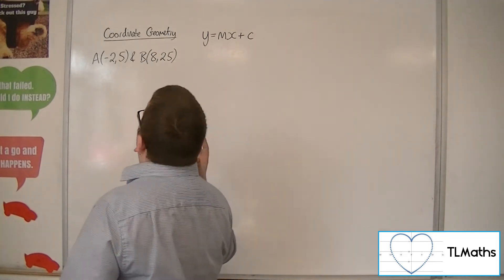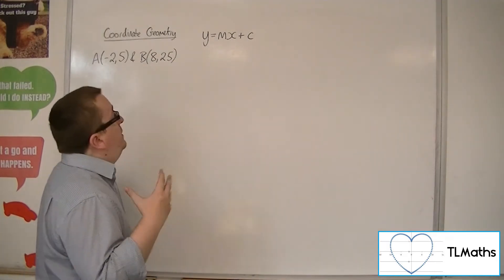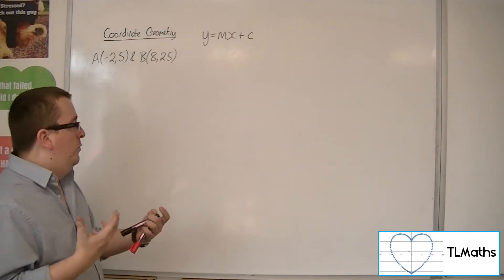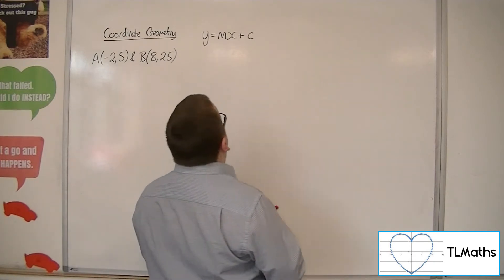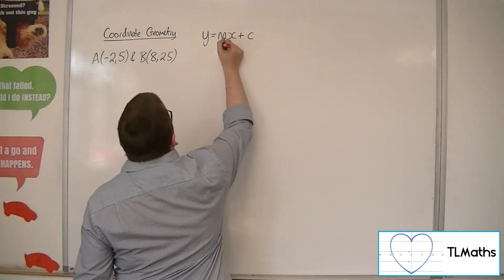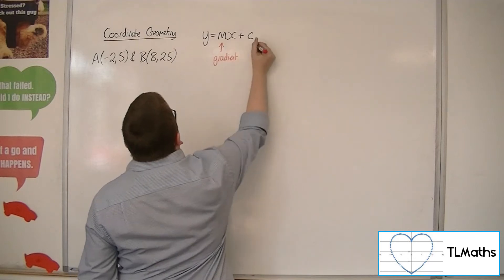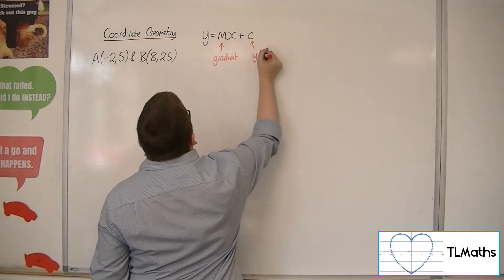So the y equals mx plus c route: because you've been taught about straight line equations before, you will know that you can identify m as the gradient of the straight line, and c as the y-intercept.